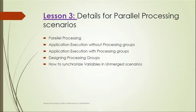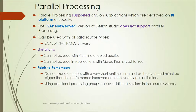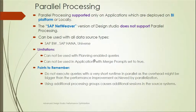Now let's look at parallel processing in detail. Parallel processing is supported only on the BI platform or locally deployed Design Studio applications — it is not supported on SAP NetWeaver. It can be used with all data source types such as SAP BW, SAP HANA, and Universe. Limitations include: it cannot be used with planning-enabled queries, and it cannot be used when the application's 'merge prompt' property is set to true.